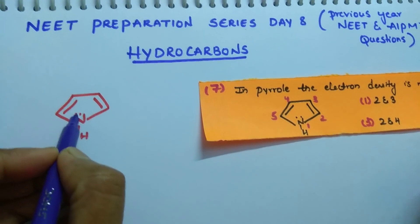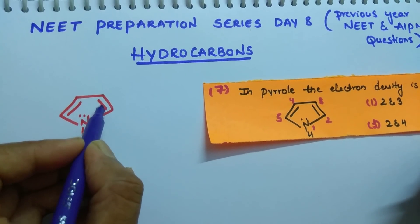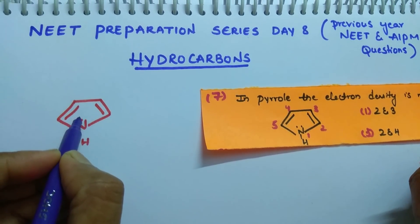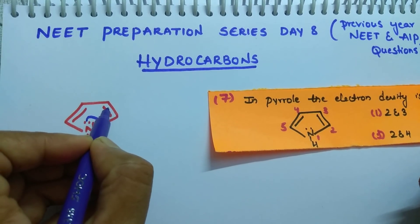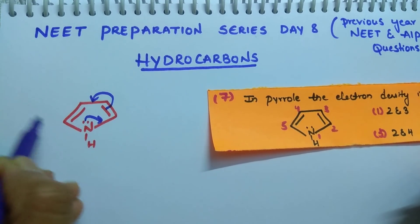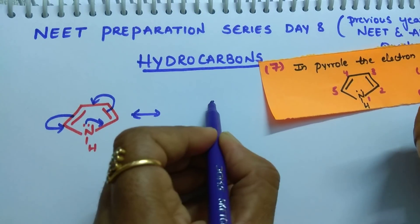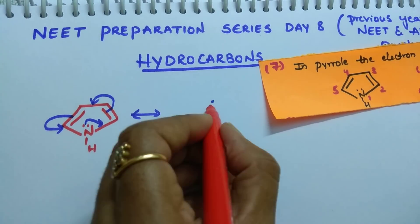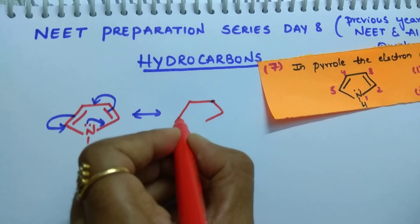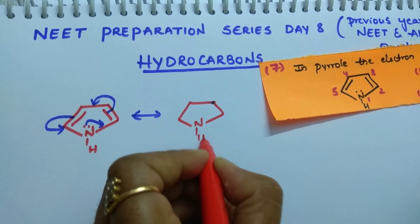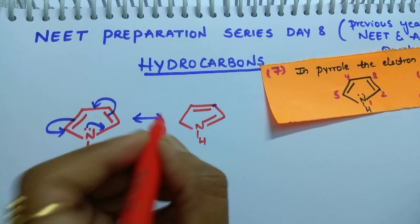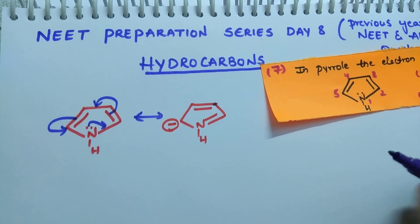See here, a lone pair is present on nitrogen. This lone pair is in conjugation with this pi bond. So, this lone pair shifts here. Then, this pi bond shifts here and this comes here. Then, we get a resonating structure like this.